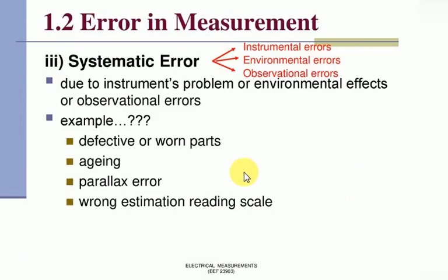Then what error is systematic error, which is environmental error, instrumental error, observational error. This error is due to the instruments problem and environmental effects and observational errors. What can this example be?